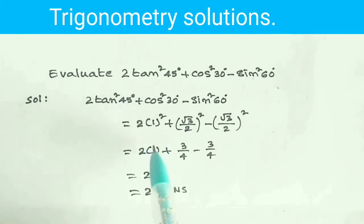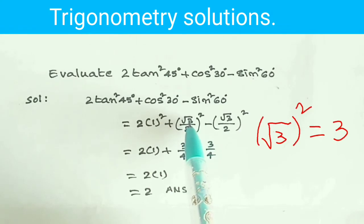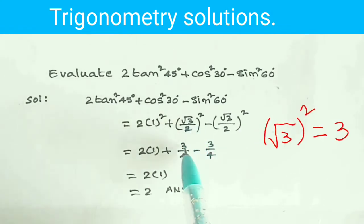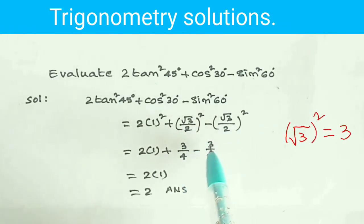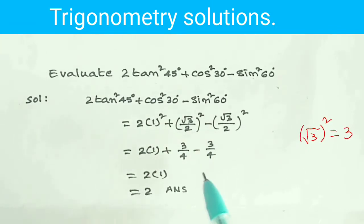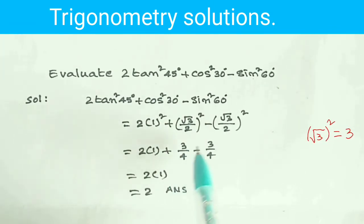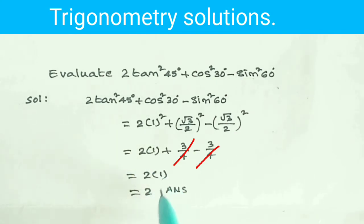1 squared is 1. Root 3 by 2 whole square is 3 by 4. Root 3 by 2 whole square is 3 by 4. Plus 3 by 4 minus 3 by 4 — both are cancelled. We will get only 2 times 1, which is 2.